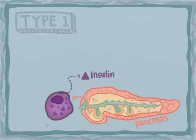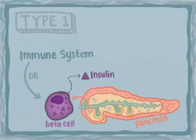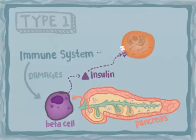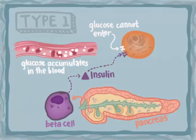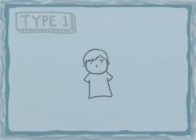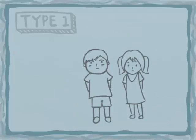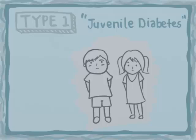In type 1 diabetes, the immune system damages the beta cells in the pancreas, preventing them from producing enough or any insulin. Without insulin, the glucose gates on the cells do not open, and sugar just builds and builds in the bloodstream. Type 1 diabetes starts during childhood, so type 1 is often called juvenile diabetes.